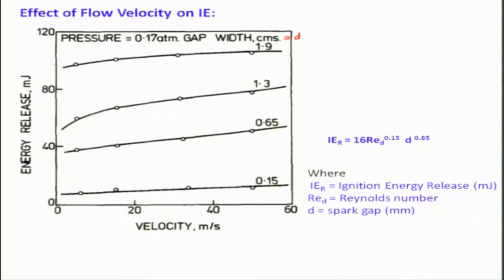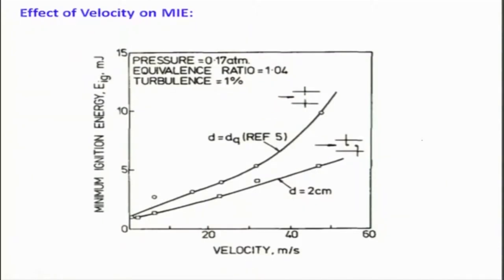Keep in mind that IR is the ignition energy release in millijoules, RE is the Reynolds number based on d as the length scale, and d is the spark gap. This is a semi-empirical result valid only for the range over which it was experimented; it cannot be generalized — that you should keep in mind. The electrode arrangement also matters: whether the electrodes are aligned with the flow or across it gives different results.